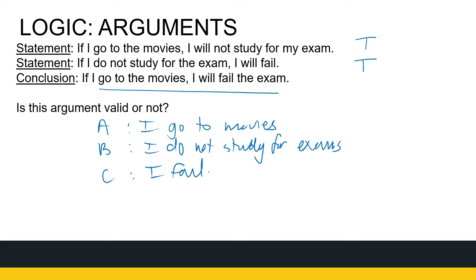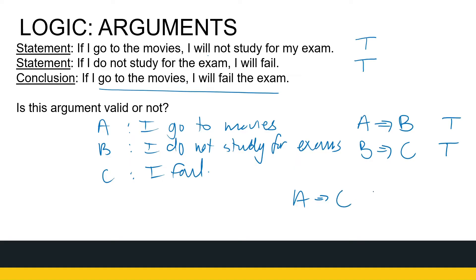Writing these statements mathematically: the first statement says A implies B — if I go to the movies, I will not study. So A implies B, and we know that's true because that's my hypothesis. The next one: if I do not study, I will fail — so B implies C, that's my next statement, and it's true. What we want to check is: is A implies C also true?